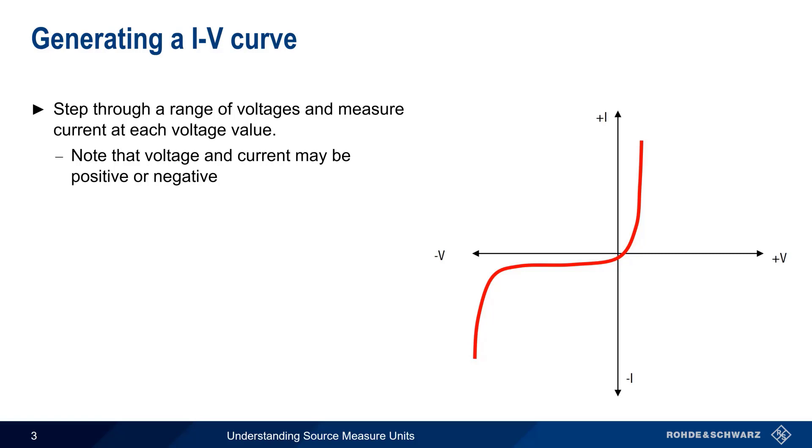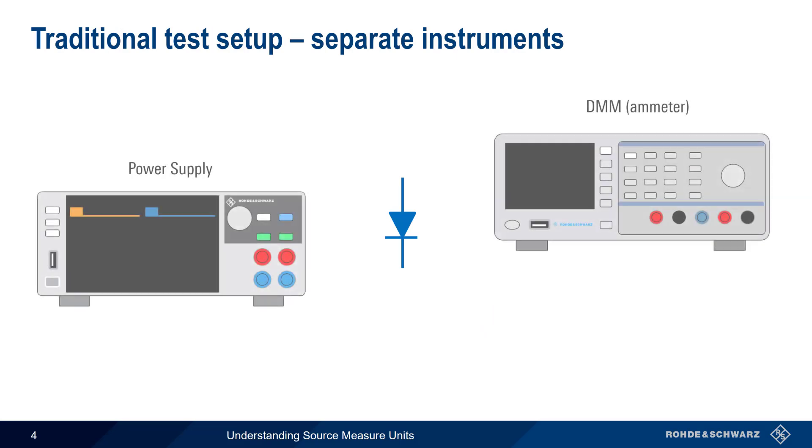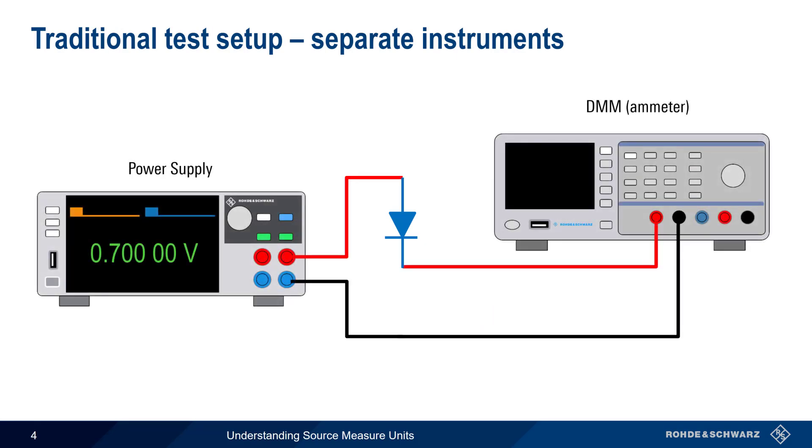Traditionally, these types of measurements require two instruments. We need an adjustable voltage supply for biasing the diode, and we also need an ammeter, or digital multimeter, for measuring the current flowing through the diode. Let's take a look at how this would be configured. Our power supply is used to bias the diode, and our ammeter, or digital multimeter, is placed in series in order to measure the current.